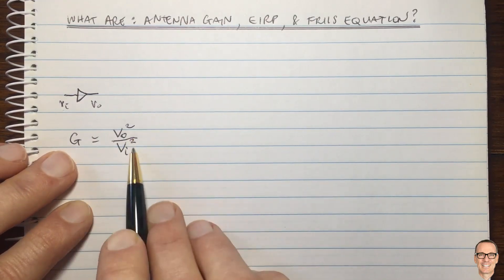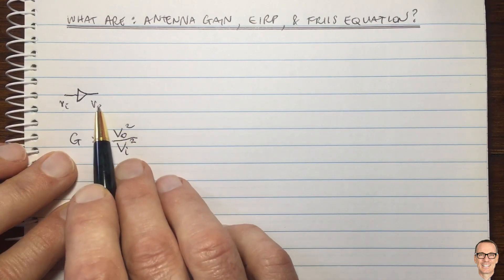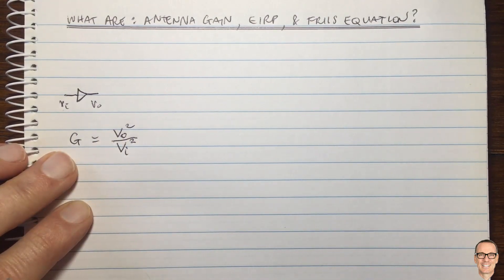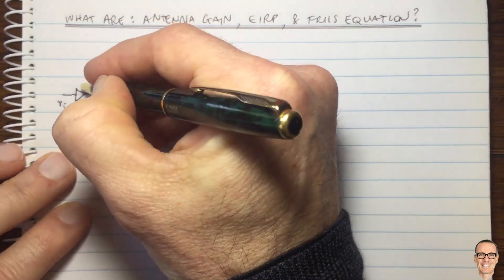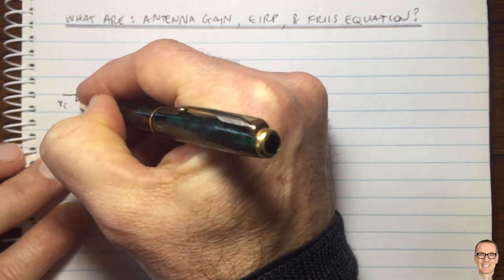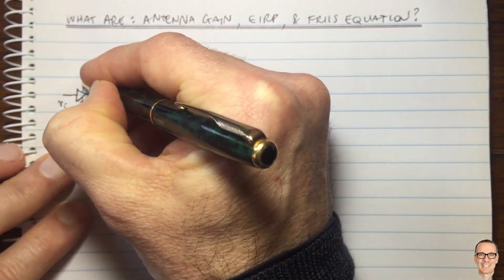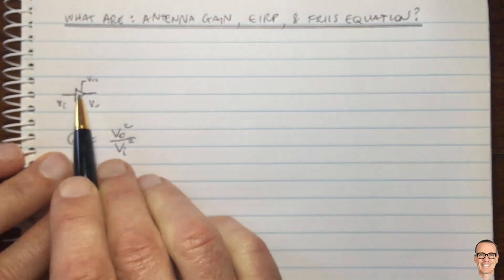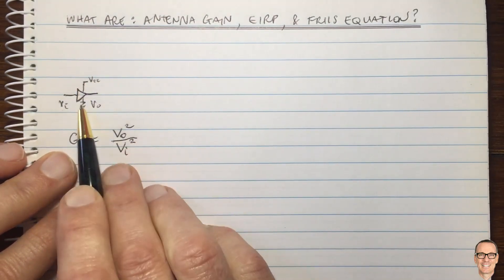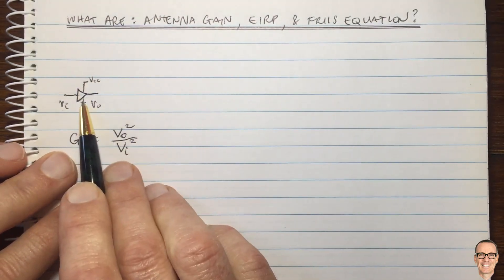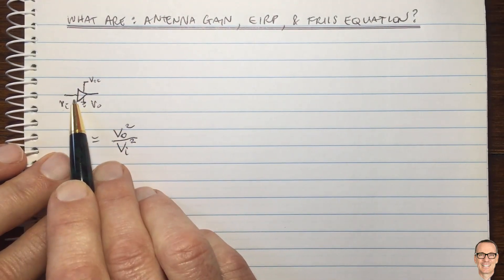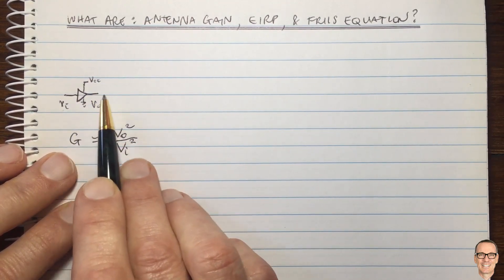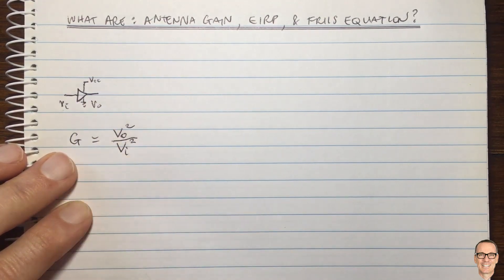Where does this gain come from? How do we get more voltage out than we had in? For an amplifier, the answer is that there's a power supply. The amplifier has a circuit with a power supply; it waits for the input signal and uses the energy from the power supply to amplify the signal.